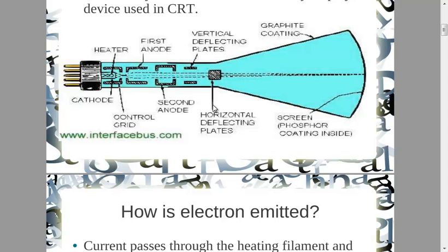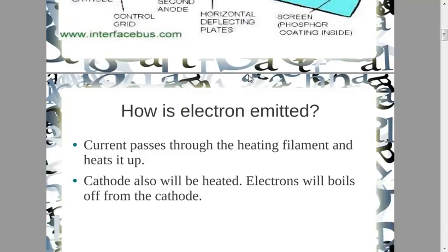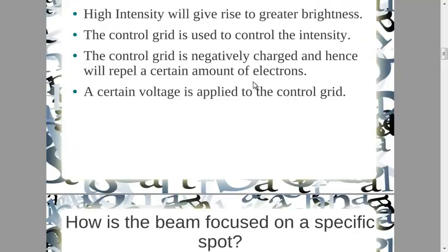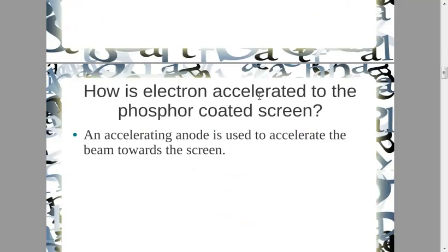If it is a vertical deflection, the beam is going to be deflected up and down. If it is a horizontal deflection, it's going to be deflected left or right, depending on whether we want to deflect it to the right or to a specific edge of the screen.